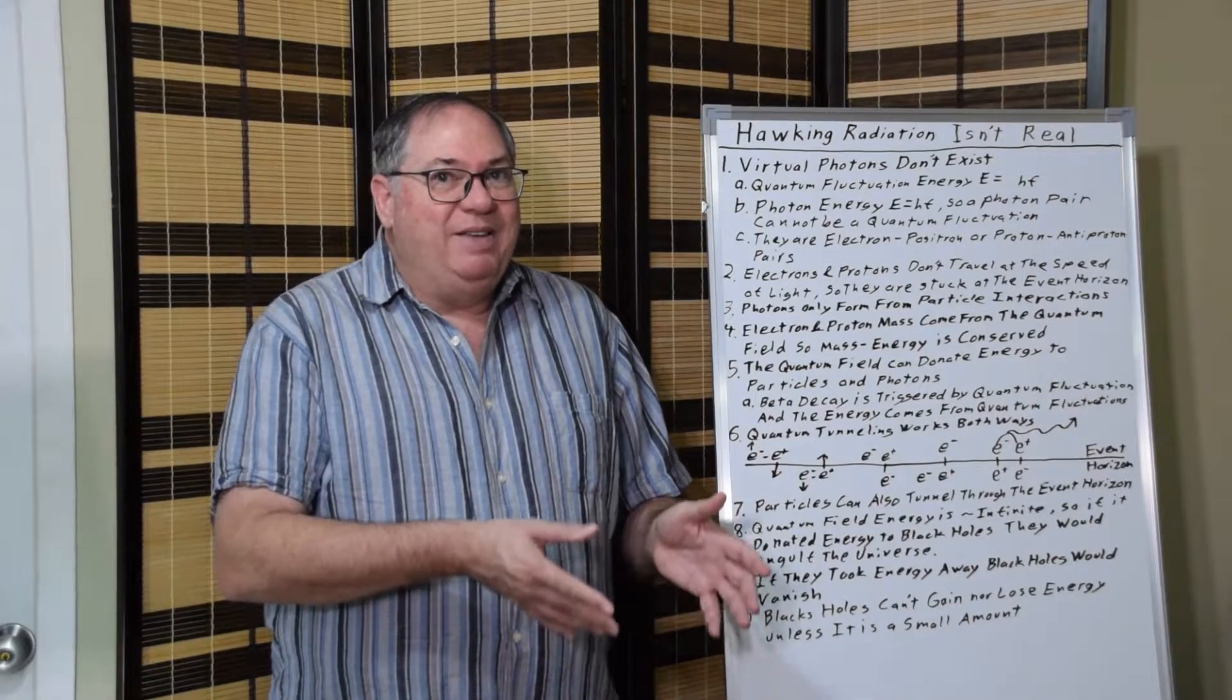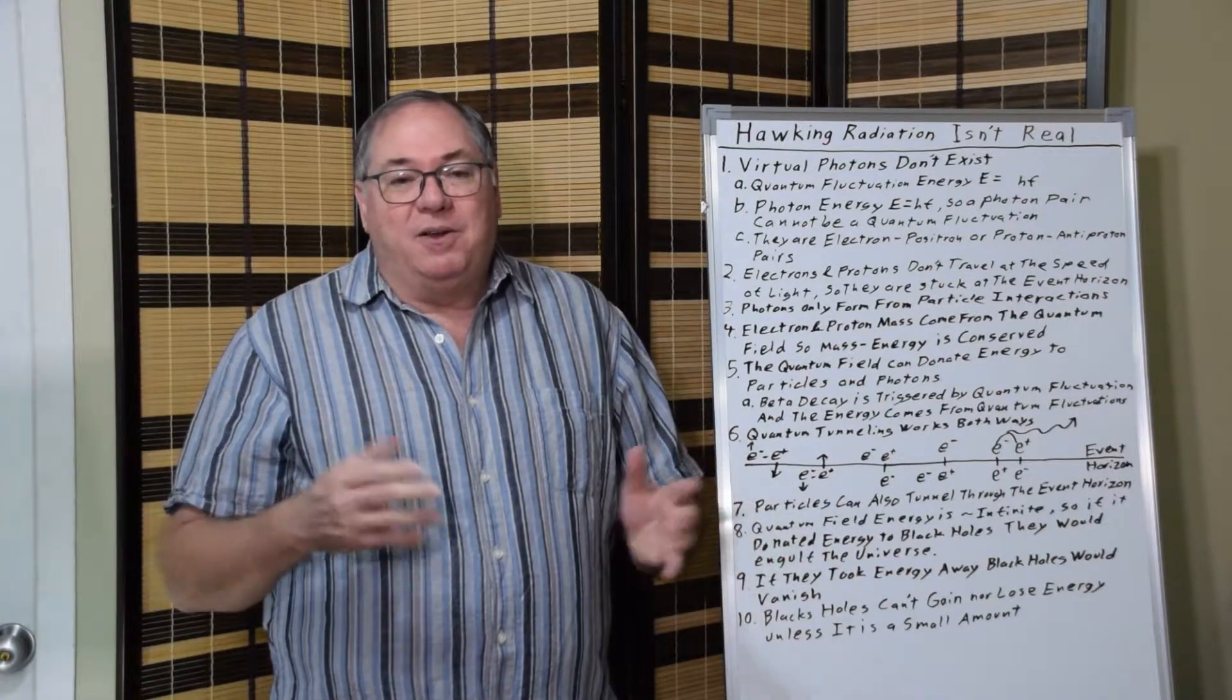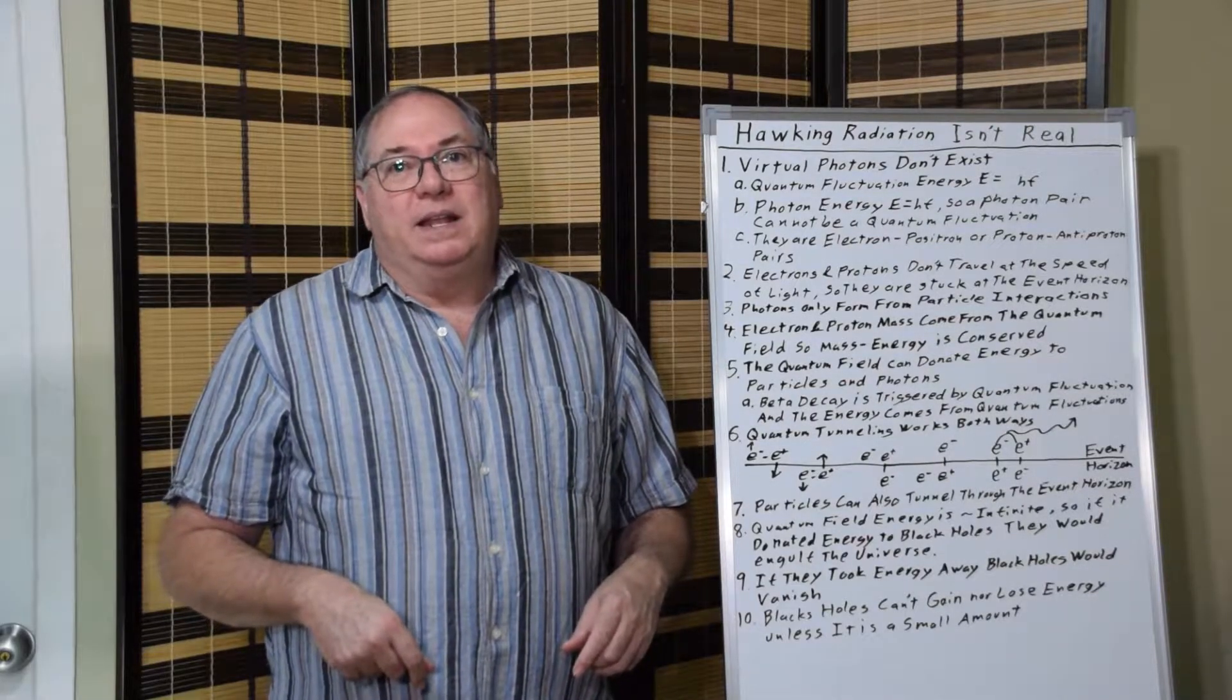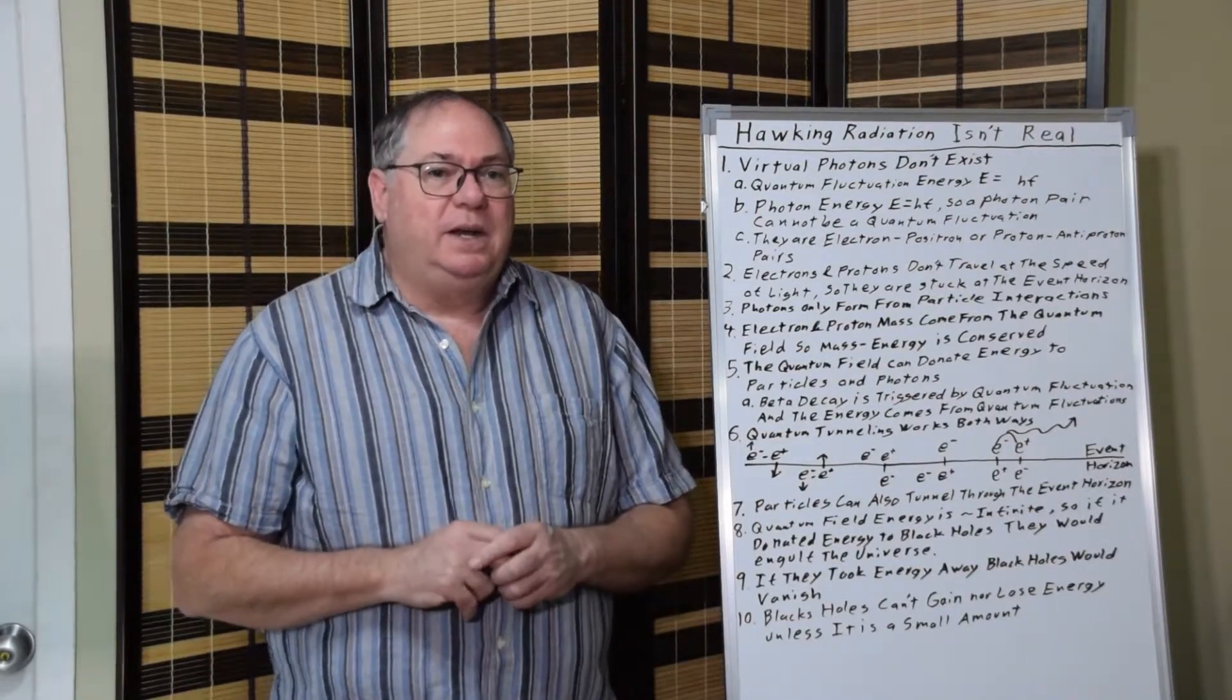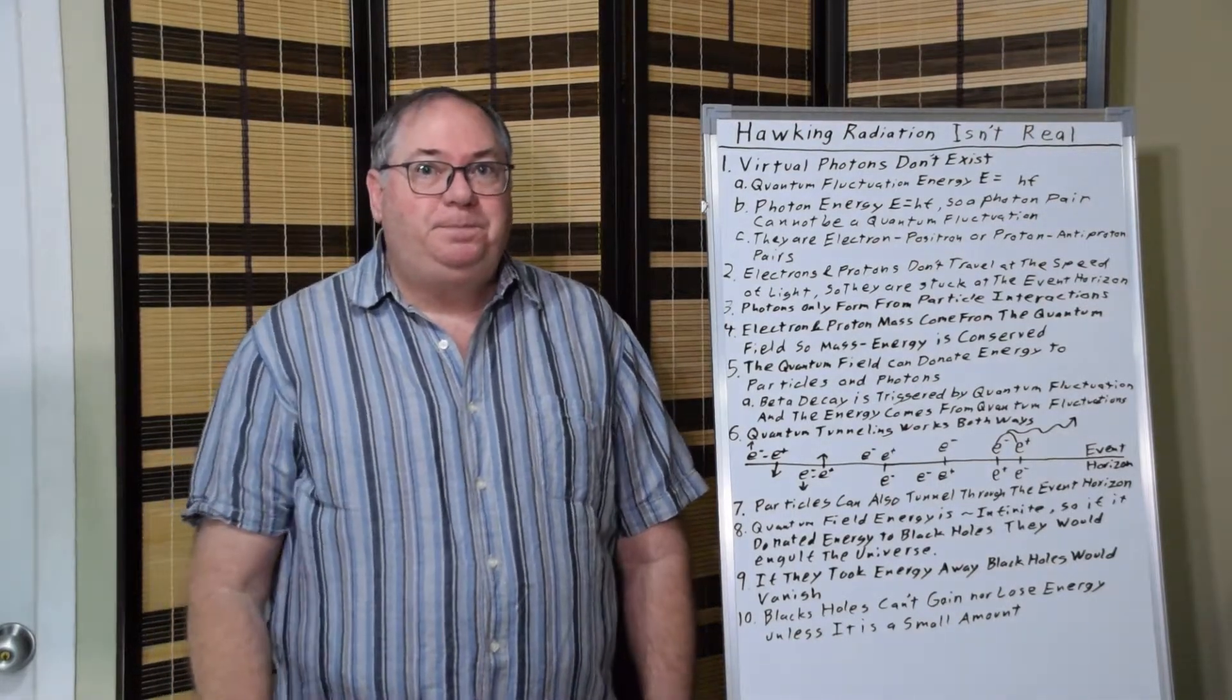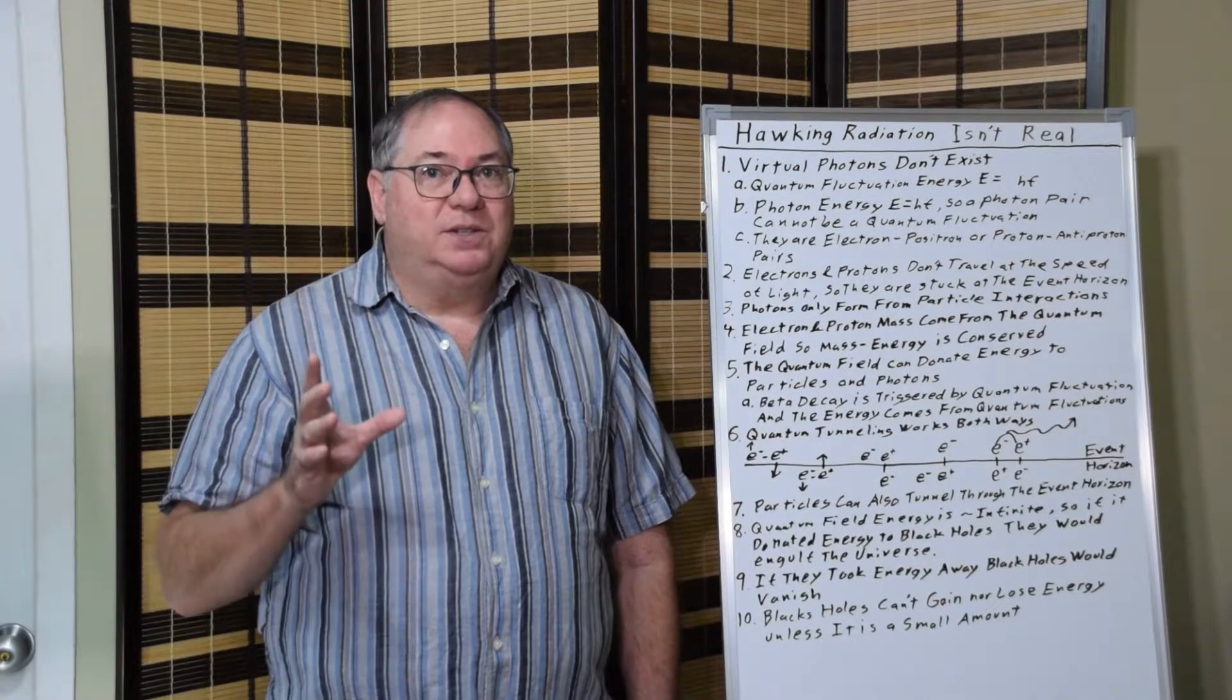In order to have waves, you first have to have a particular medium, which means you have to have something there. And so I'll go through this using strictly particular approach. So part A of this is the quantum field energy is E equals HF. So two photons is not a quantum fluctuation because there's too much energy. It's a physical impossibility to have a pair of photons as a quantum fluctuation, as a virtual particle.